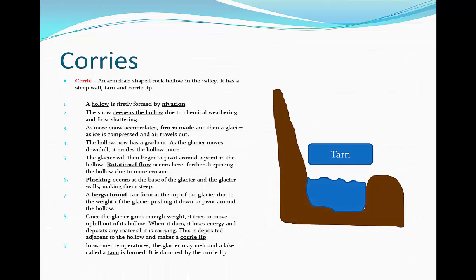In warmer temperatures, the glacier may melt and a lake is formed. This lake is called a tarn. It's dammed by the corrie lip which has been formed by the deposited material from the glacier. For example, the Eastdale tarn is a formation of a tarn at the end of a corrie, located in the Lake District in the UK.